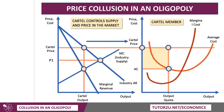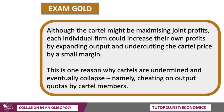You might already be able to see from that diagram that if a cartel member was able to increase output a little bit and charge that high price, they could make more profit. So although the cartel might be maximising joint profits, any individual firm could increase their own profits by expanding output and undercutting the cartel price, perhaps surreptitiously at an unofficial price. This is indeed one reason why cartels are undermined and eventually collapse — namely, individual firms cheating or reneging on output quotas. Game theory helps to explain why it may be rational for firms to undercut a collusive agreement.